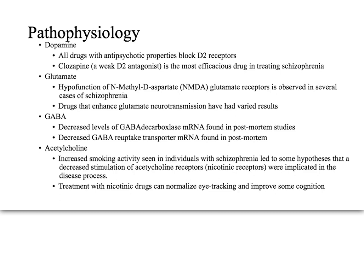Regarding pathophysiology, nobody really knows exactly what's going on — which is probably true of most neurological diseases, given the brain's millions of connections. Several neurotransmitters are implicated: dopamine, glutamate, GABA, and acetylcholine. All drugs with antipsychotic properties block dopamine receptors.